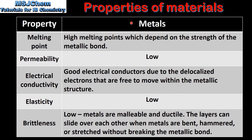We'll start by looking at the properties of metals. Metals have high melting points which depend on the strength of the metallic bond. They have low permeability, and they are good electrical conductors due to the delocalized electrons that are free to move within the metallic structure.